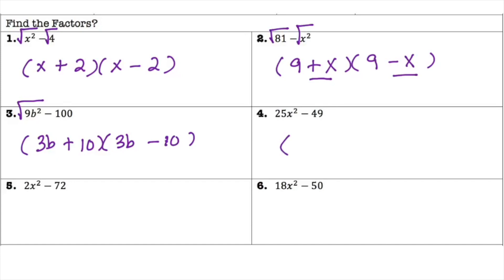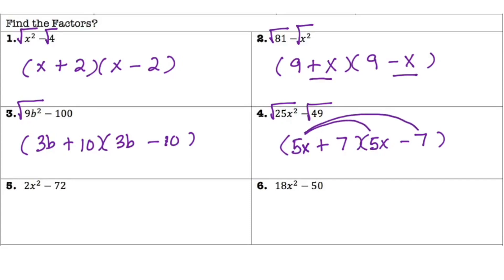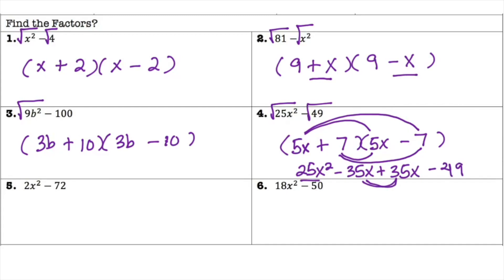For number 4, set up your parentheses and verify both terms are perfect squares being subtracted. 25 is a perfect square, x squared is a perfect square, and 49 is a perfect square. The square root of 25x squared is 5x and the square root of 49 is 7, giving (5x + 7)(5x - 7). Checking by distribution: 5x times 5x is 25x squared, 5x times negative 7 is negative 35x, 7 times 5x is positive 35x — those cancel — and 7 times negative 7 is negative 49. Every time you use difference of squares, those middle terms cancel out.